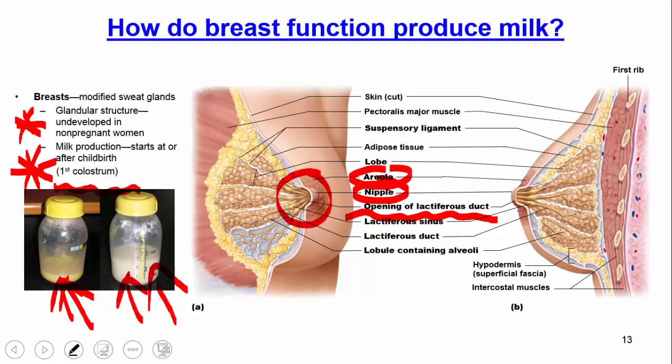Once a mother starts breastfeeding, she needs to continue at a regular pace. Starting and stopping can cause accumulation of milk in the sinuses, which becomes quite painful and takes a while to reverse. The areola region also has large sebaceous glands that produce an oily sebum, which minimizes chapping or cracking of the breast during breastfeeding. It's quite a complicated process with a lot going on.